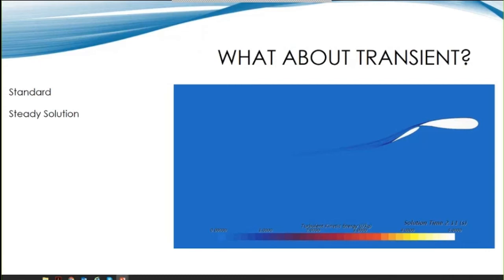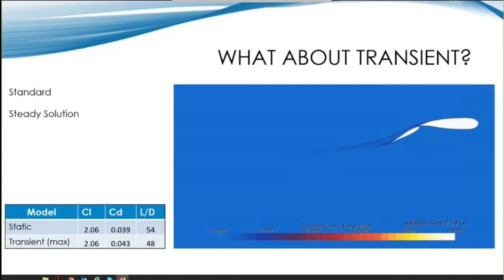What about transient effects? What happens if we take that into account for the highest lift configurations of each concept? For the existing design, the rigid flap and sail, the flow remains attached and is steady. So the performance from our static flow analysis is very close. The max drag computed for the transient analysis is a little higher though.